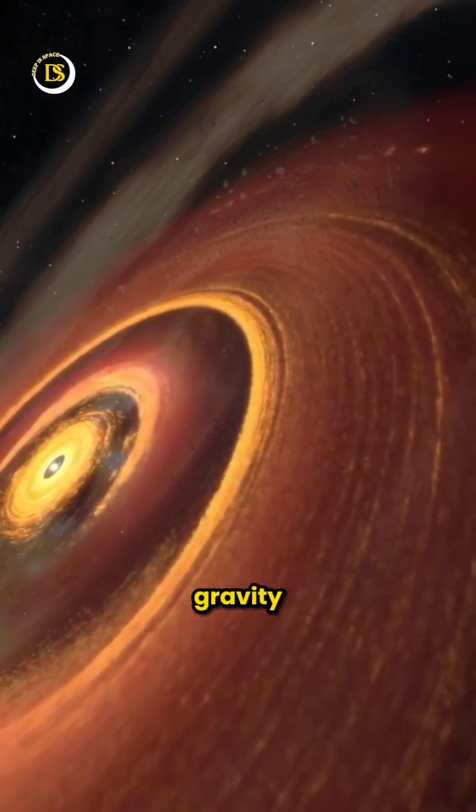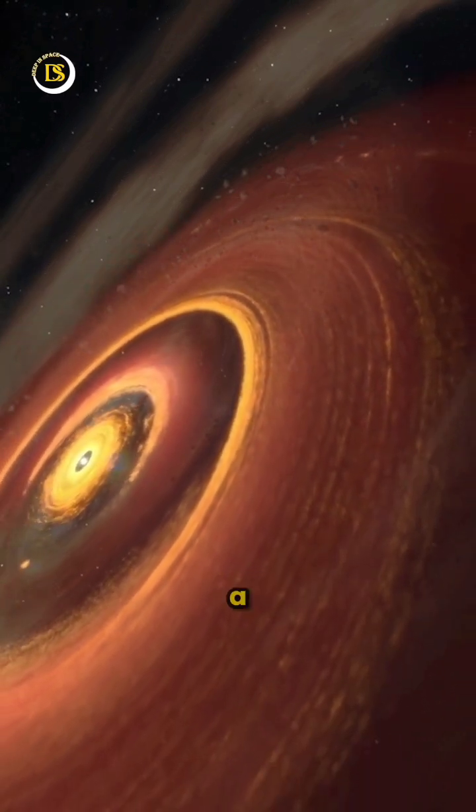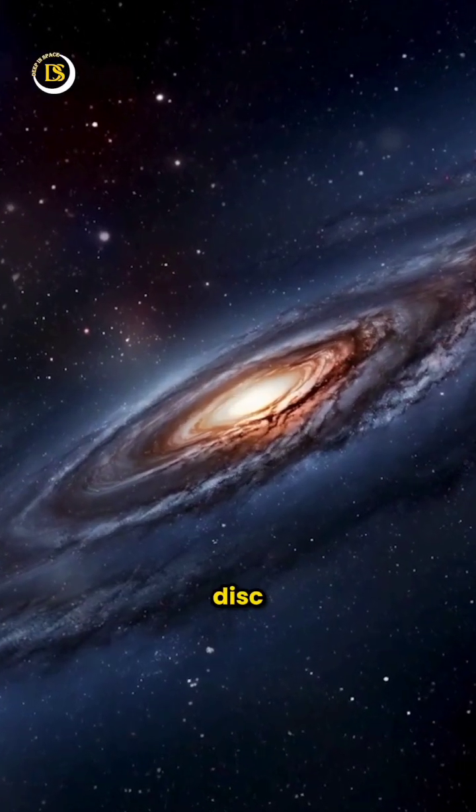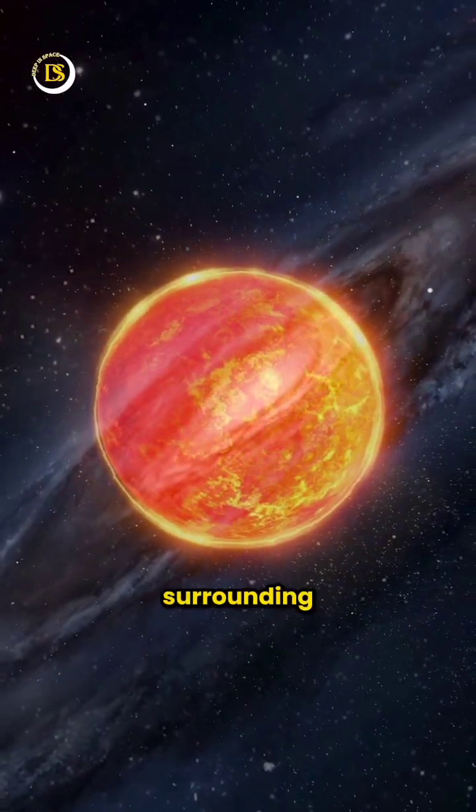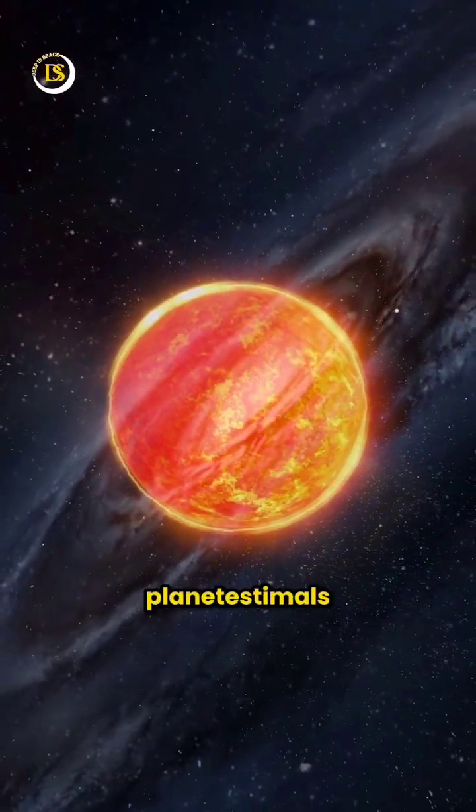As the nebula spun, gravity caused it to collapse and flatten into a spinning disk. In this disk, the central dense region eventually became the sun, while the surrounding material coalesced into planetesimals.